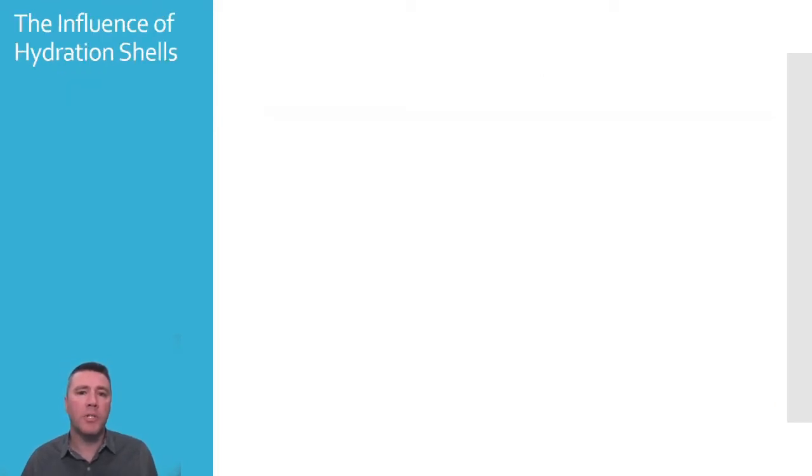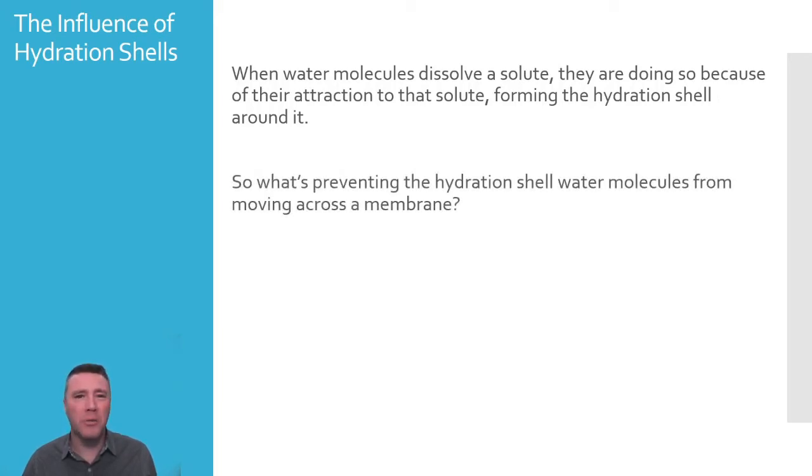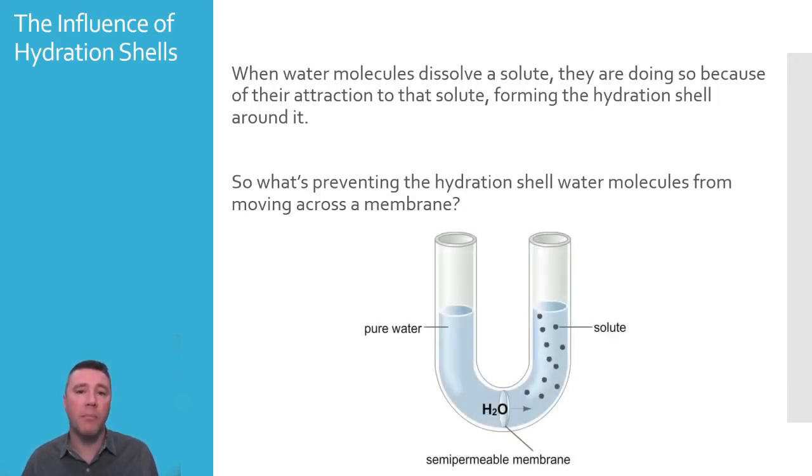In order to understand why changing the concentration of a solution affects solute potential, let's revisit hydration shells. Recall that when water molecules dissolve a solute, they surround that solute due to their attraction to it. Once any given water molecule is participating in a hydration shell, it is no longer free to diffuse via osmosis across a membrane. Why are those water molecules unable to do so? Let's attempt to quantify this concept with a simple model.